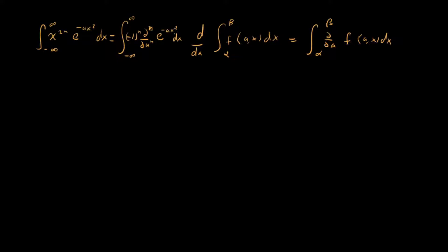If we take another derivative, we pull down another x squared and get x to the fourth out in front. Each derivative with respect to a pulls down another factor of x squared with a minus sign — that's why we need the minus one to the n factor. So this integral is just the same as taking a bunch of derivatives of the Gaussian with respect to a, not x.